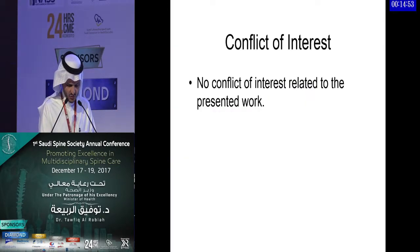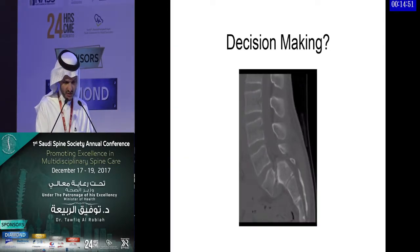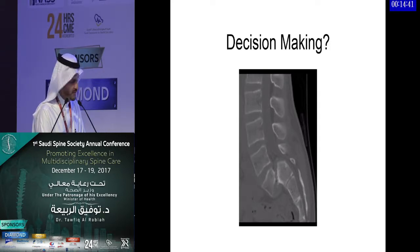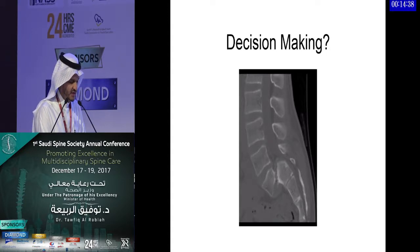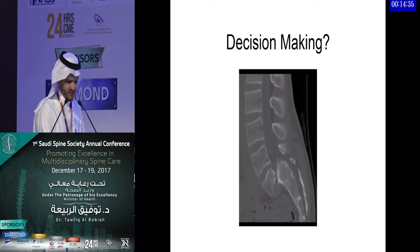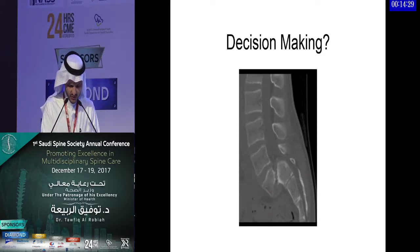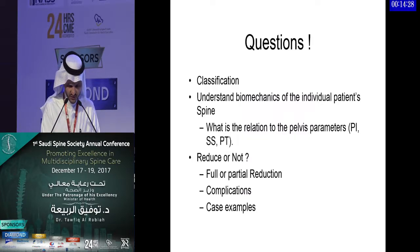I have no conflict of interest to disclose. When you face a case like this — a young patient, 13 or 15, coming in with low back pain, many of them have posture abnormalities and pain radiating to their lower limbs — what sort of decision-making process do you go through when you decide for their surgery?